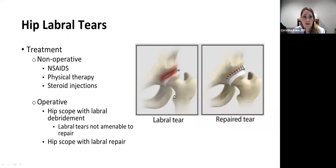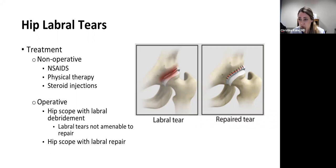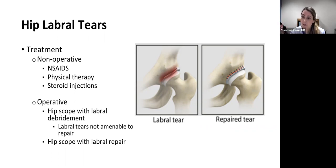For treatment of hip labral tears, we typically start with non-operative treatment. Initial treatment may include NSAIDs and physical therapy as first-line treatment, plus or minus a steroid injection. I usually avoid steroid injections in younger patients because multiple steroid injections over time can degrade soft tissue structures, so this is generally the first-line defense for labral tears.